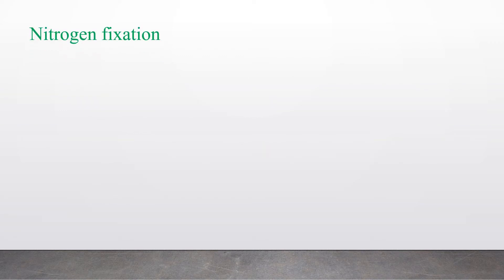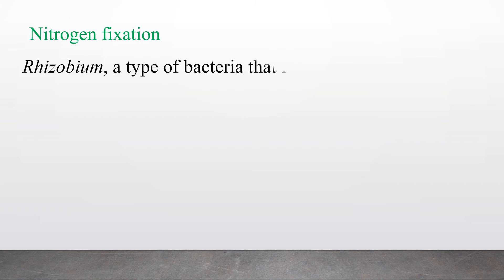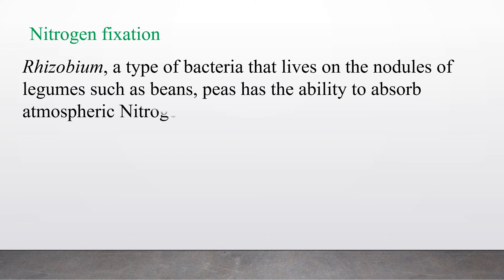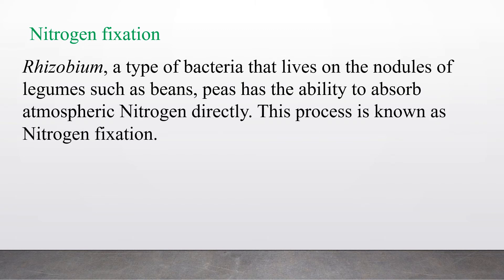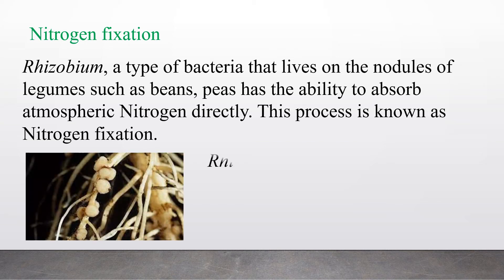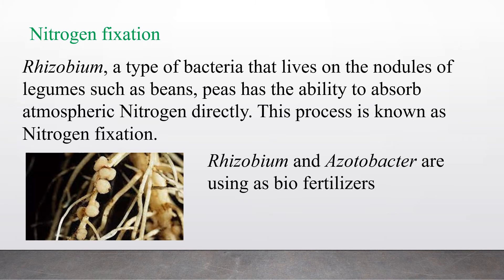The next application is nitrogen fixation, which is a natural process. Rhizobium, a type of bacteria that lives in the nodules of legumes such as beans and peas, has the ability to absorb atmospheric nitrogen directly. This process is known as nitrogen fixation. Plant roots cannot absorb atmospheric nitrogen directly, so these bacteria help fix nitrogen into plants. This figure shows a mimosa plant root with root nodules containing rhizobium bacteria. Additionally, Acetobacter, a free-living bacteria, can also fix nitrogen. Both Rhizobium and Acetobacter are used as bio-fertilizers.